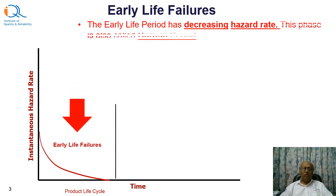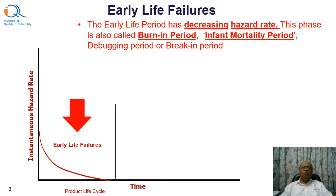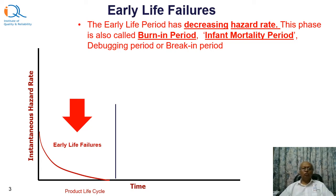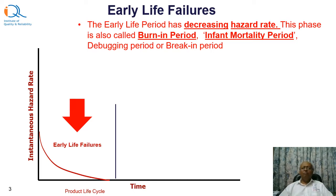Let us consider the early life failures first. The early life failure period has a decreasing hazard rate — so over a period of time the failure rate goes down, and generally the hazard rate decreases and becomes nearly zero before the warranty period of the product is over. This phase is also often called the burn-in period, sometimes called infant mortality period, debugging period, or break-in period. The hazard rate is going down and the phase is nearly over at a particular time, which may vary by product.